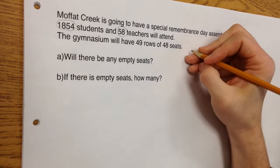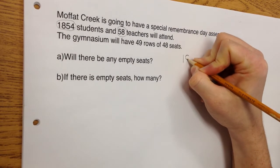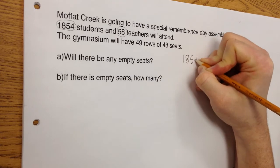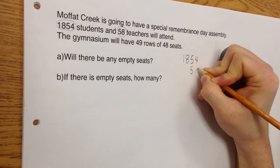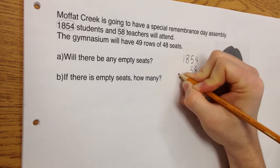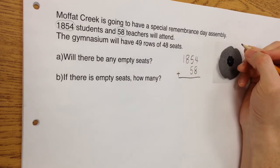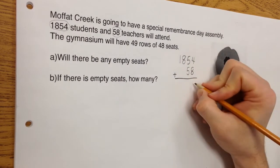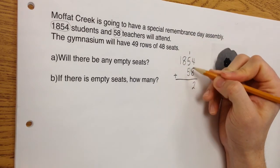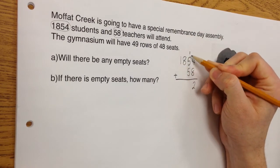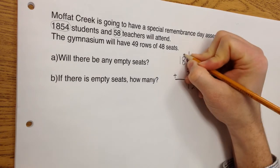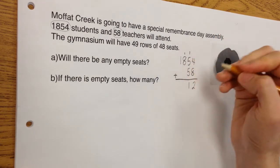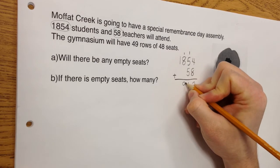So I can maybe do that over here. 1,854 plus 58. I can add those together. I take my 4 and my 8 because I always start with my ones column and I get 12. Carry the 1. Then I move into my next column. 5 plus 5 is 10 plus 1 is 11. So again, I carry the number. And I have 1 plus 8, which is 9.